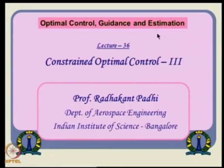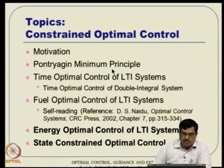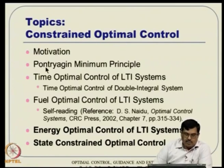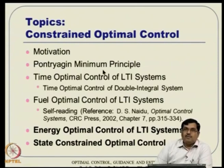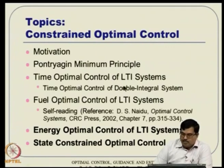Hello everybody. Let us continue our lecture series on Optimal Control, Guidance and Estimation. We are in the third lecture of this Constrained Optimal Control, which is going to be the last lecture in this series. So far, we have seen motivation for why we need constrained optimal control, and studied it in the Pontryagin's minimum principle framework. Then we used that in time optimal control of LTI systems, demonstrating the double integral system in detail.